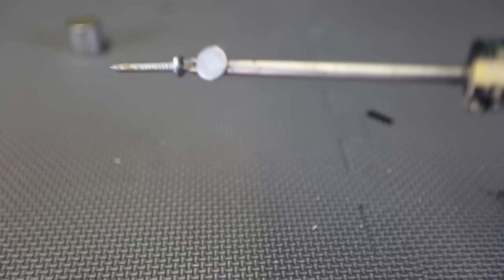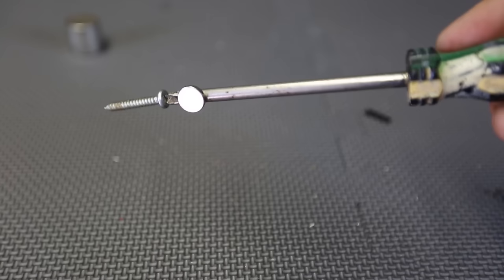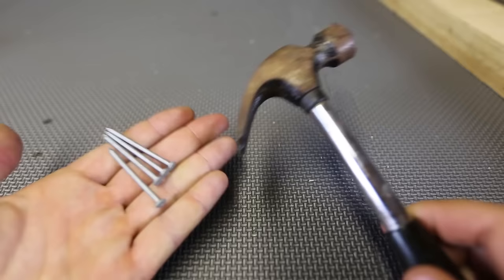Simply grab a neodymium magnet and just put it on the side of a screwdriver like this. And that way you don't have to worry about your screw falling off your screwdriver and that makes it a lot easier to use a screwdriver.